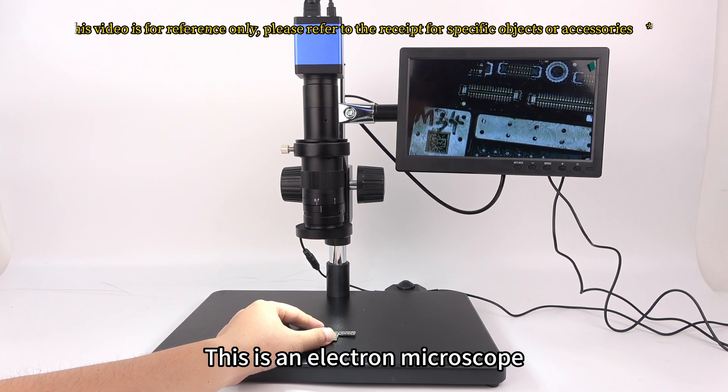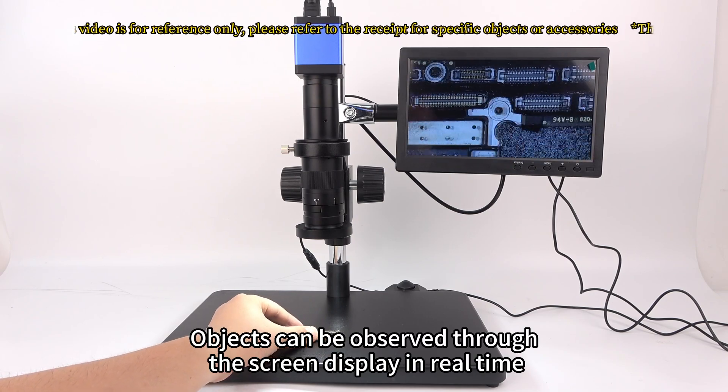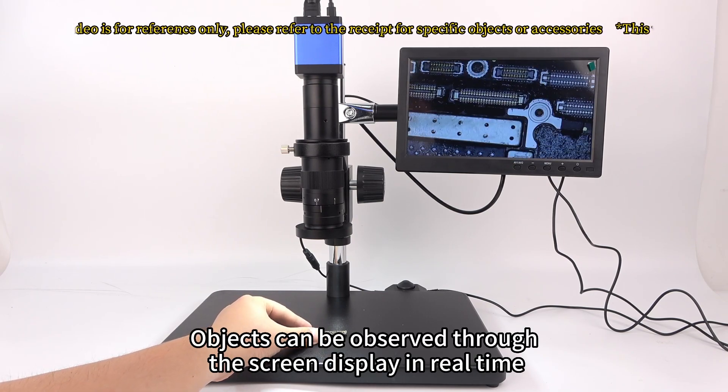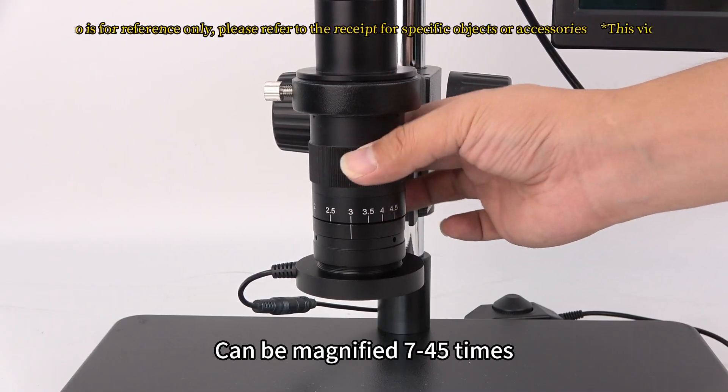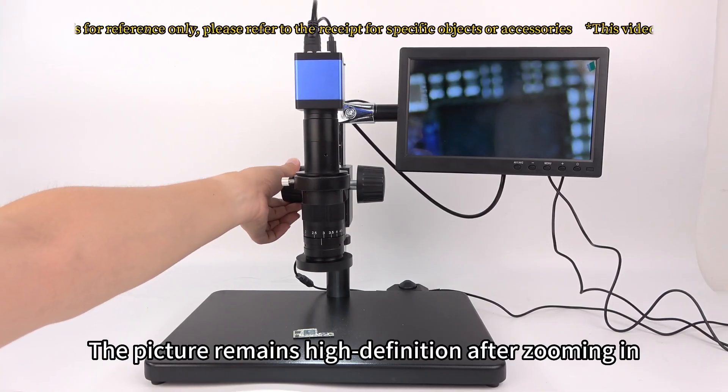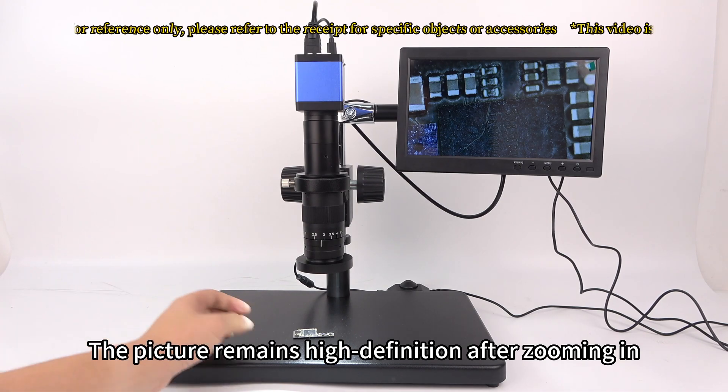This is an electron microscope. Objects can be observed through the screen display in real time. Can be magnified 7 to 45 times. The picture remains high definition after zooming in.